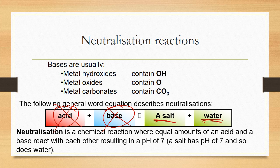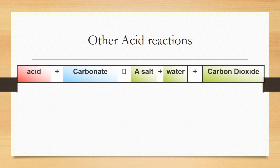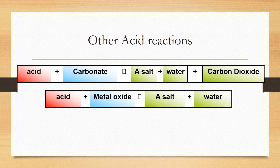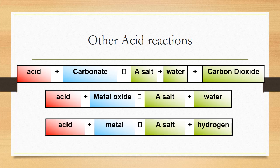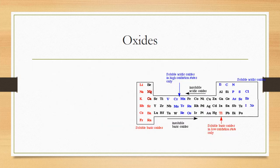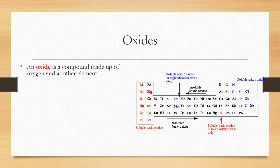The solution goes from being either acidic or alkaline to neutral. Other reactions you need to know: acid + carbonate → salt + water + carbon dioxide; acid + metal oxide → salt + water; acid + metal → salt + hydrogen.